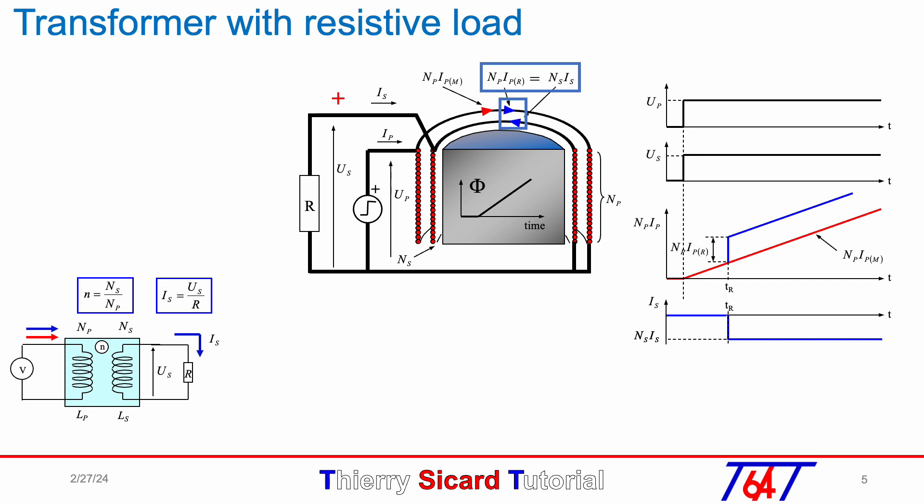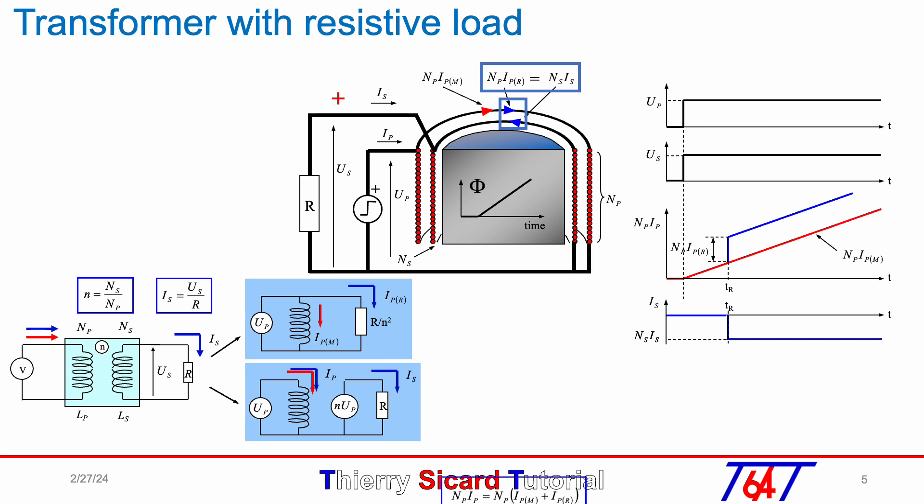If we replace the secondary resistance by the resistance viewed from the primary side, R_P equals R over n squared, we can do a new schematic with everything on the primary side. The resistor will have I_PR and I_PM in the inductor L_P. Or we keep the primary and secondary with the secondary voltage equal to n times U_P, providing I_S in the resistor R. But the primary current will be the sum of L_P current plus the current of the resistor R on the primary side. But in this case, the primary current is I_PM plus I_PR.